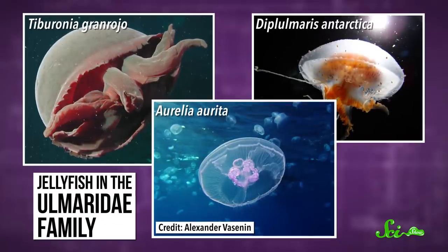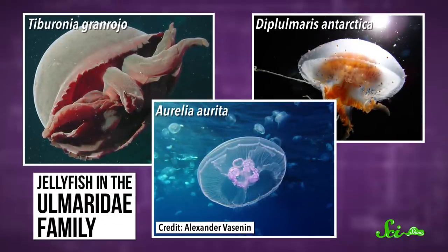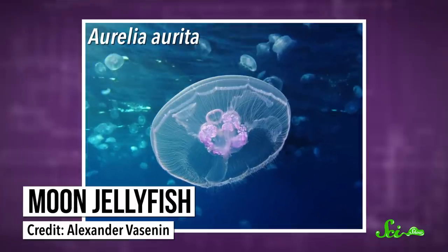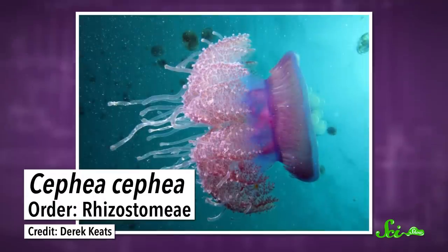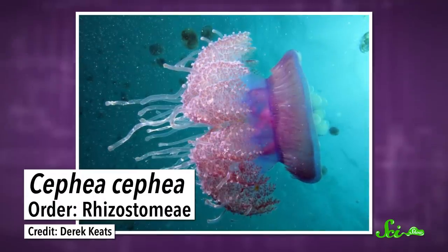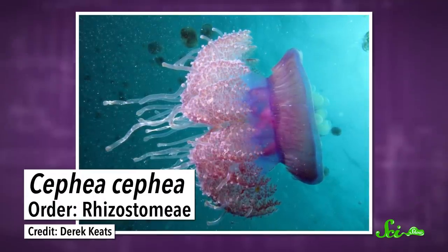Deepstaria jellies belong to the Ulmaridae family, one of the most ancient lineages of jellyfish. If you're familiar with the moon jelly, they're also a member of this family. Ulmaridae jellies are cousins with another order of jellies, the rhizostomes, and some of these aren't any more familiar-looking, either.